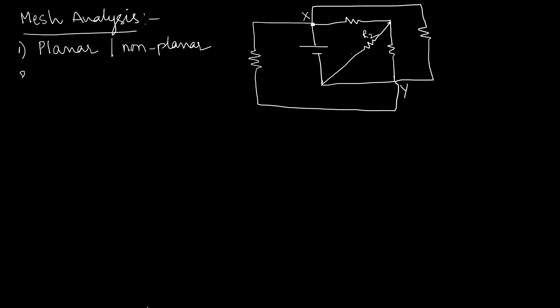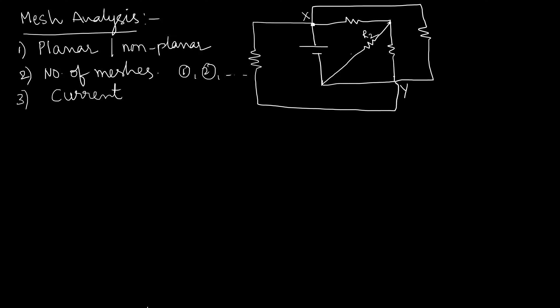The second step is to identify the number of meshes — you may count them as 1, 2, and so on. The third step is you assume current directions. If your problem is given with the current directions, then you have to follow the given directions; otherwise, you can choose your own directions.